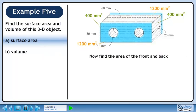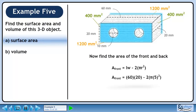Now find the area of the front and back. The area of a rectangle is length times width. We have two circular holes, so subtract their areas from the full rectangle area. Plug in the length and width of the rectangle and the radius of the circle. The surface area is 1042.92 mm².